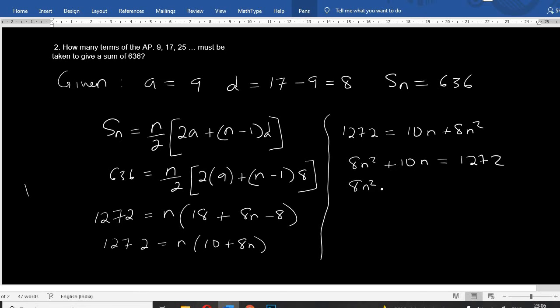This is the same thing. What's the equation? 1272 equals 0. 4n squared plus 5n minus 636 equals 0.